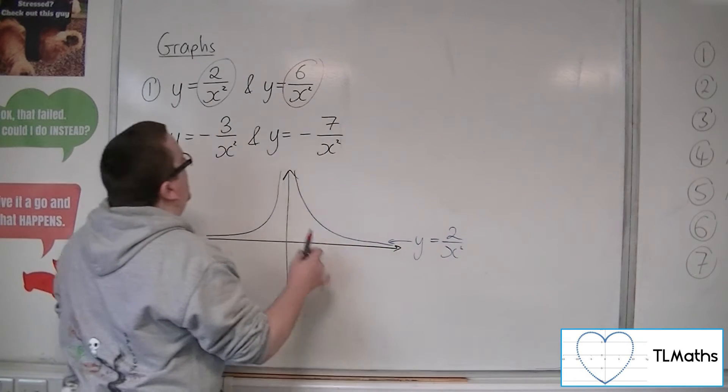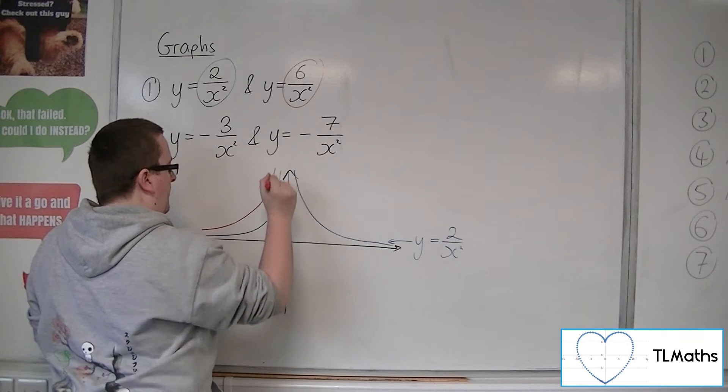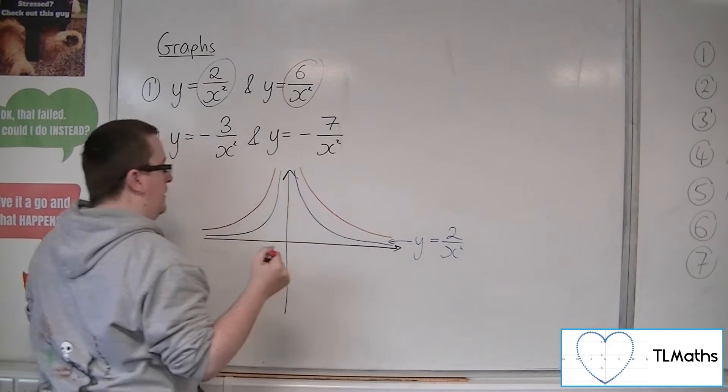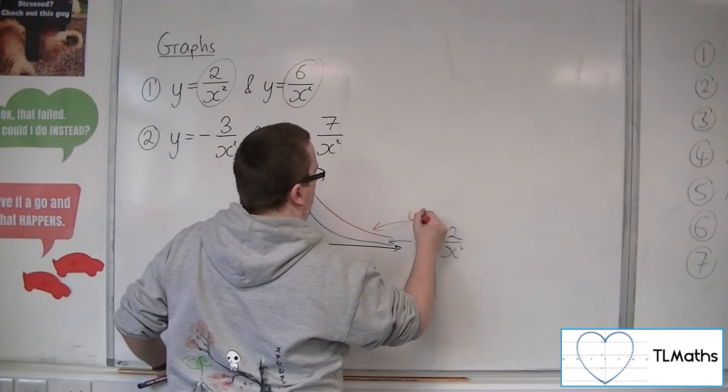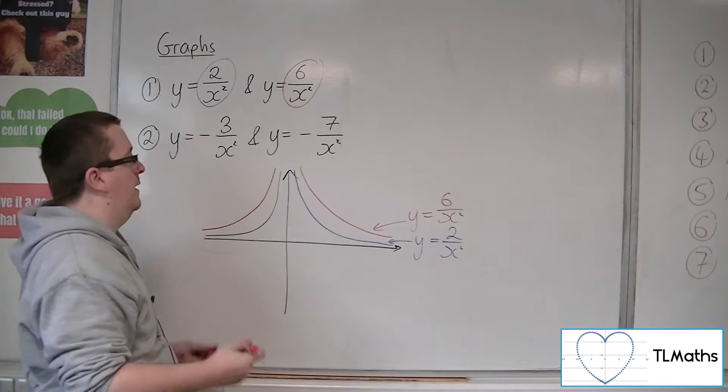So it's going to look similar, but it's going to appear further up. So this would be y is equal to 6 over x squared, for example.